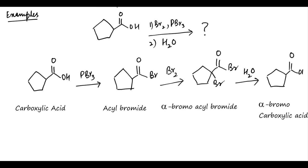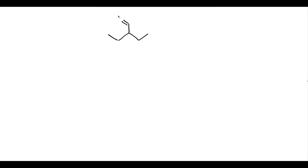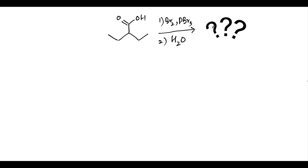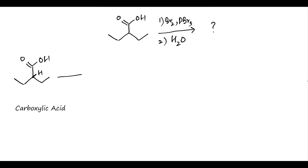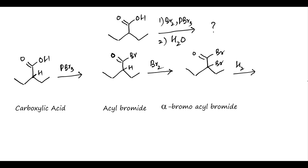Similarly, let us predict the product when this acid is treated with bromine in the presence of PBr3. As in the previous example, treatment with PBr3 converts the carboxylic acid into acyl halide, which on treatment with elemental bromine forms alpha-bromoacyl bromide. This, on hydrolysis, gives the alpha-bromo carboxylic acid.